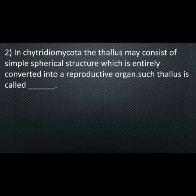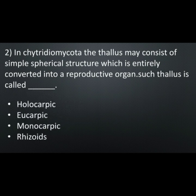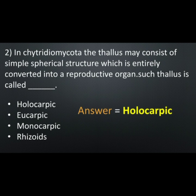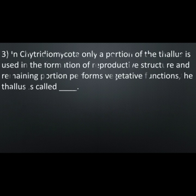Second MCQ: in Chytridiomycota the thallus may consist of a simple spherical structure which is entirely converted into a reproductive organ. Such a thallus is called — options are: holocarpic, eucarpic, monocarpic, rhizoid. Correct option is: holocarpic.